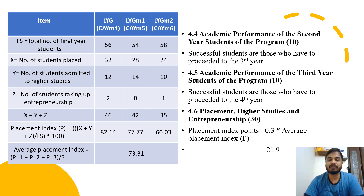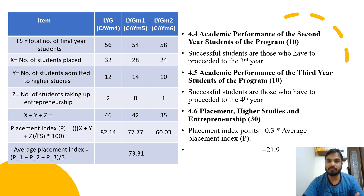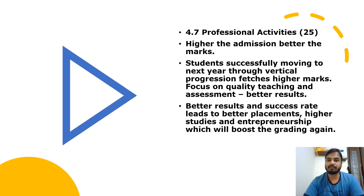From 4.1 to 4.6, the total is 95 marks. For all these, more the number means more the marks — whether with respect to student entry, success rate, academic performance, or placement, entrepreneurship, and higher studies. Greater quantity reflects greater quality and greater marks. The remaining 25 marks are allotted to professional activities including student participation at state and national level, winning prizes, conference participation, and contributions to magazines, journals, and other publications.